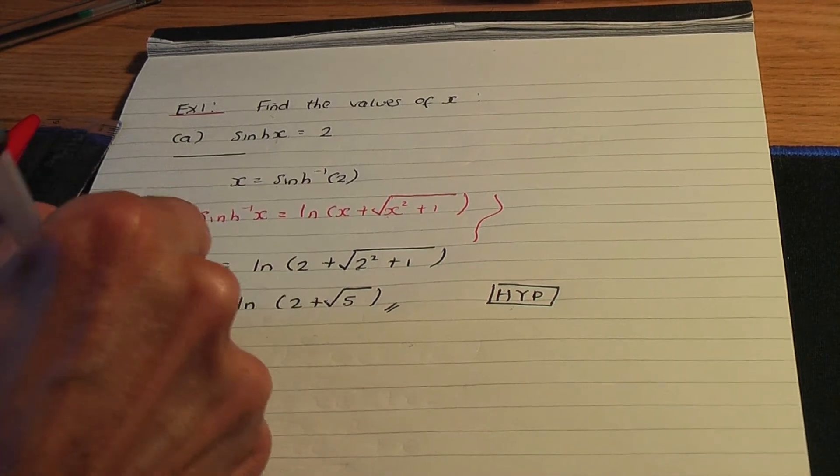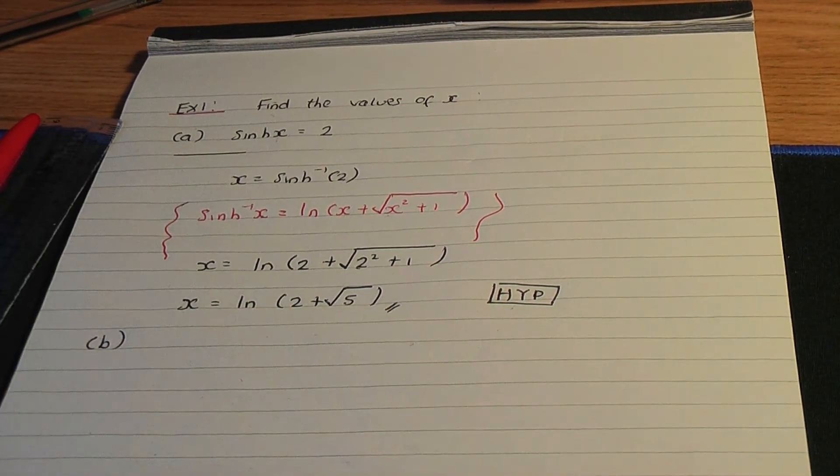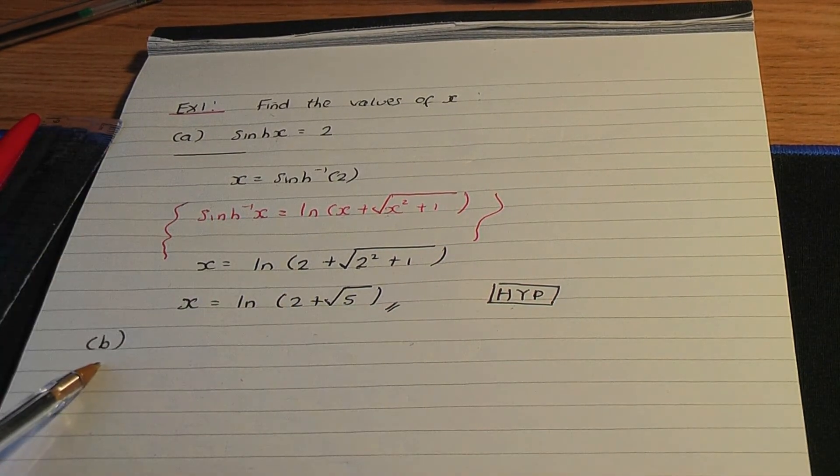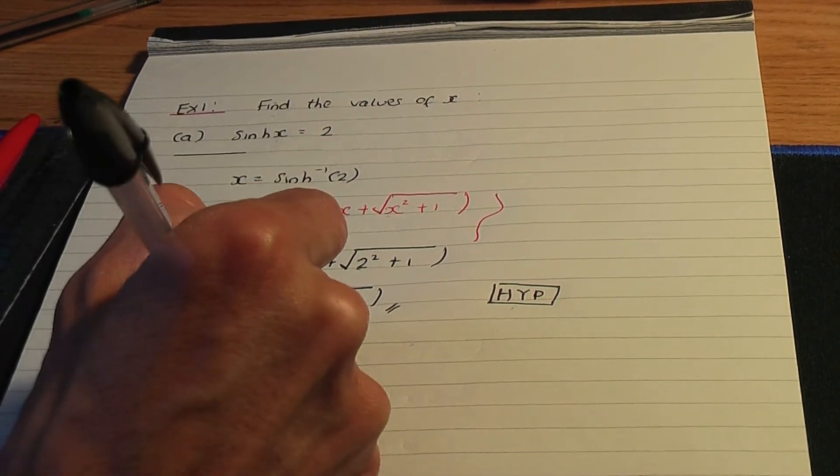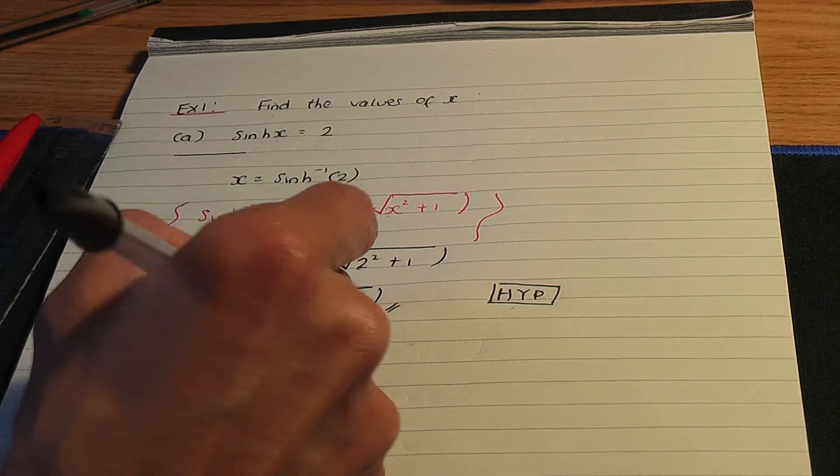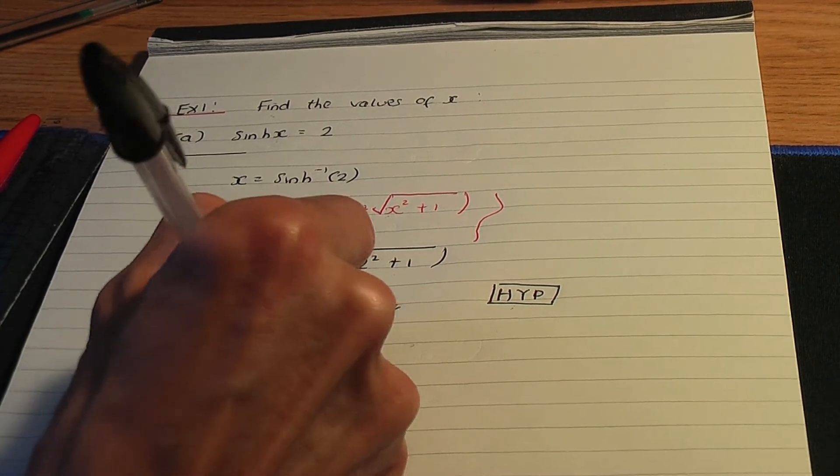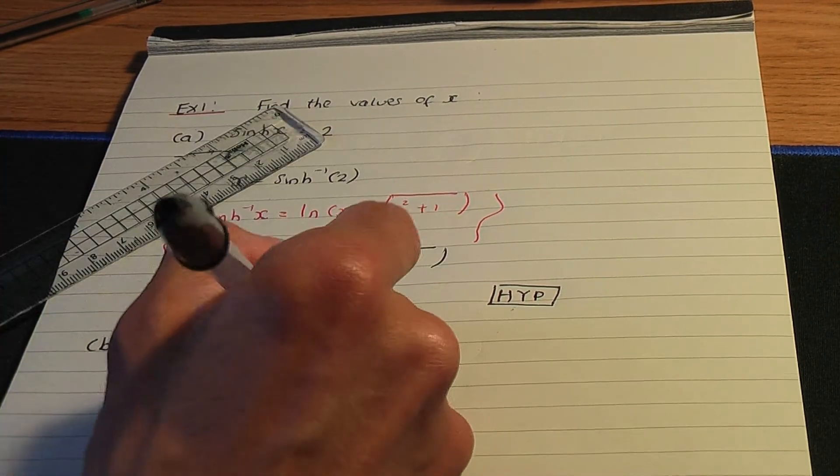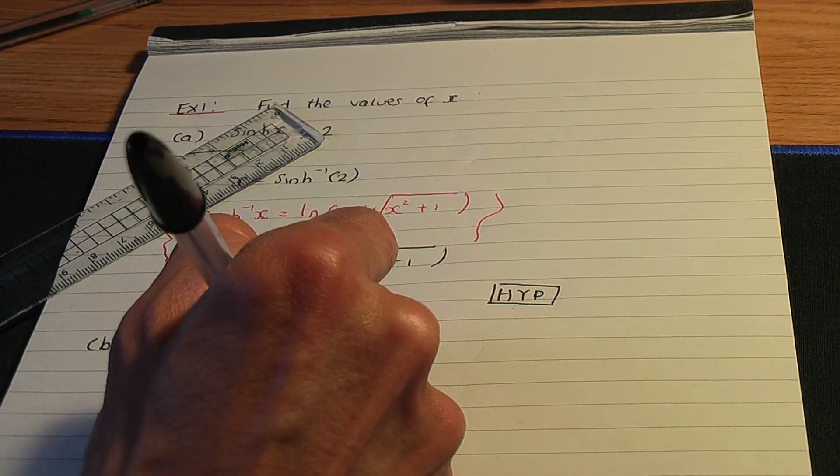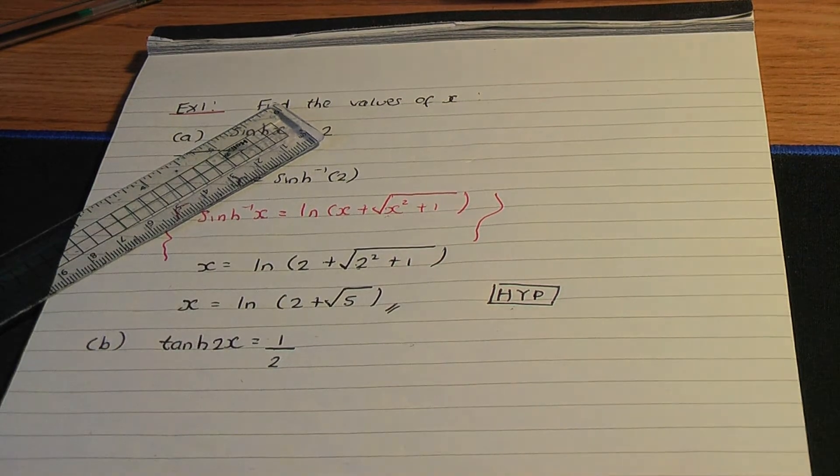Let me go through another example. Here's an example B. Same question, different example. Let's solve hyperbolic tan 2x equals 1 over 2.